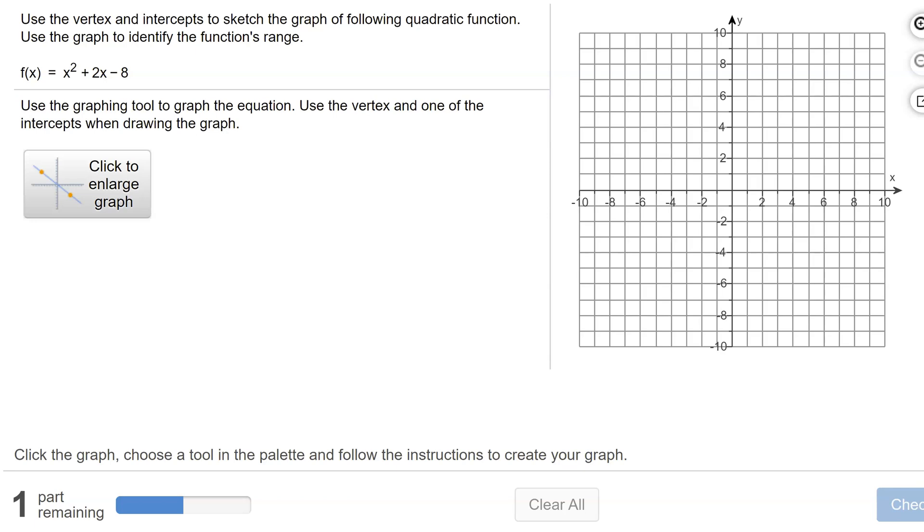Here is a problem from MyMathLab in which we need to use their parabola graphing tool. In this problem, we need to use the vertex and intercepts to sketch the graph of the following quadratic function. Then we need to use the graph to identify the function's range.